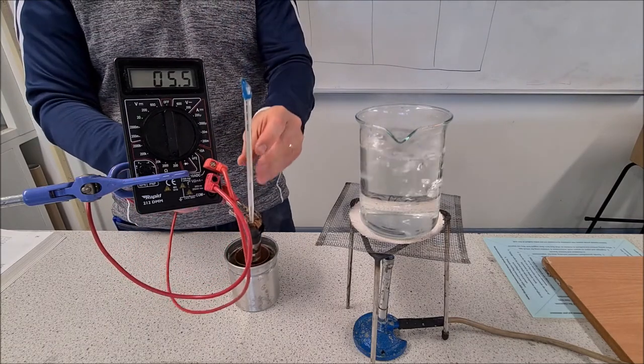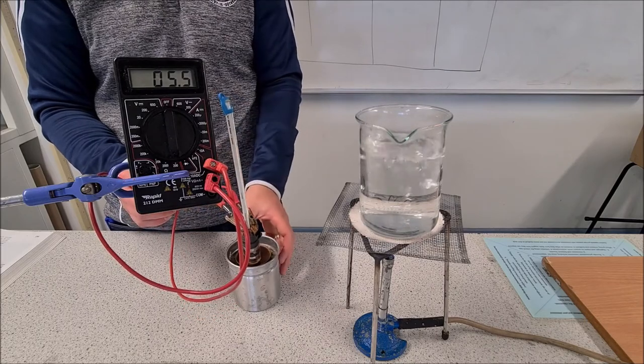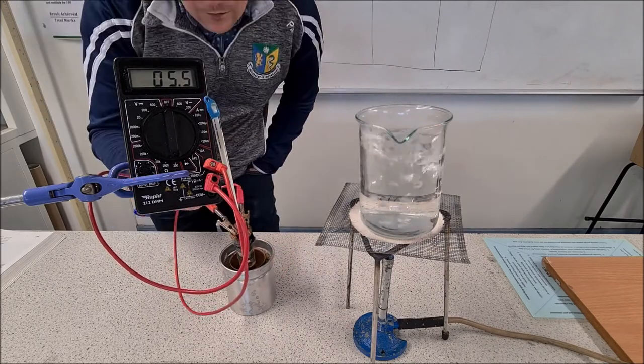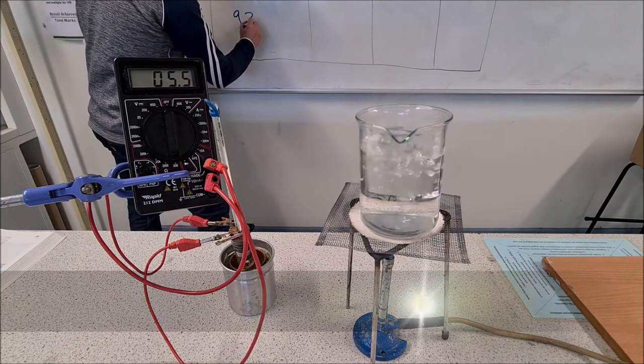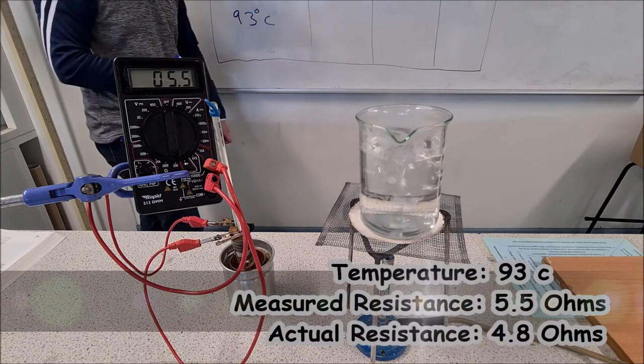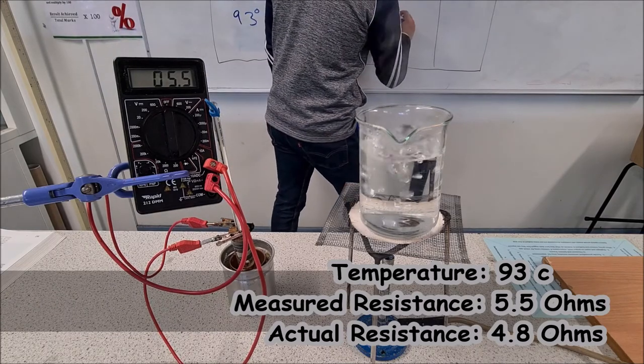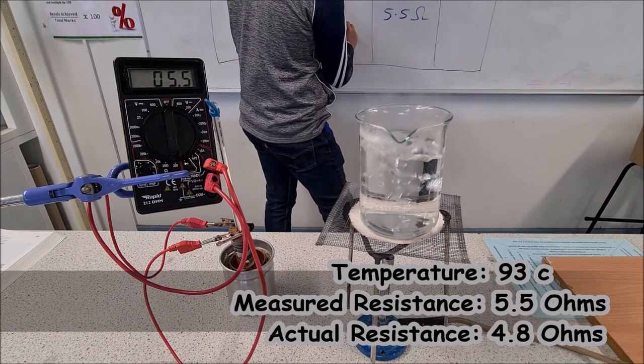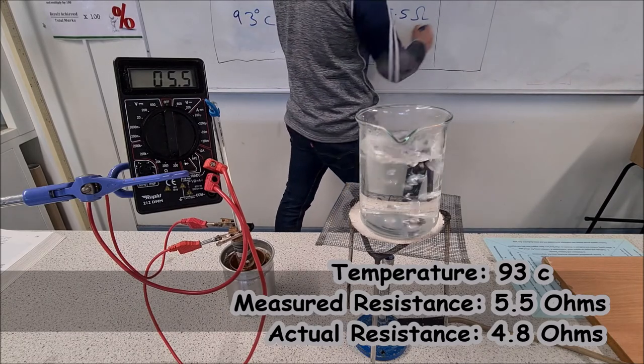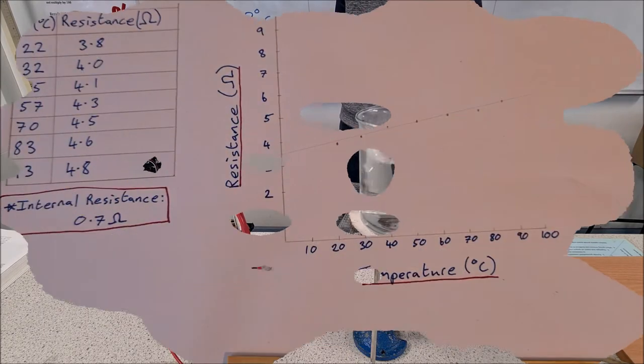Let's give this a moment to settle down. See what our final temperature is. Our final temperature is 93 degrees Celsius and the resistance is 5.5 ohms. Once we take away our 0.7 ohms internal resistance we are now up to 4.8 ohms.